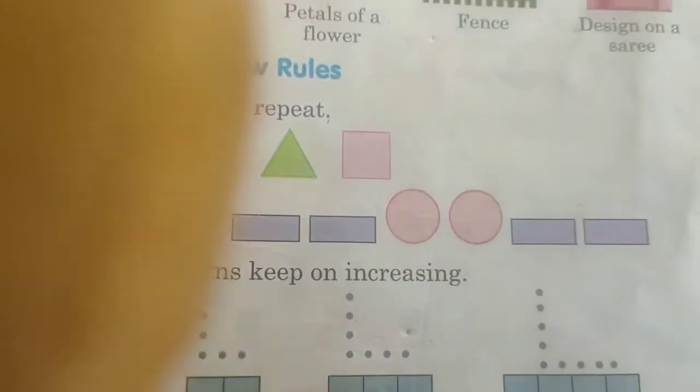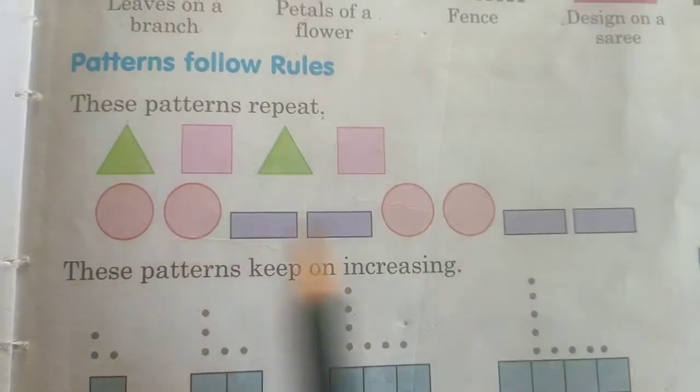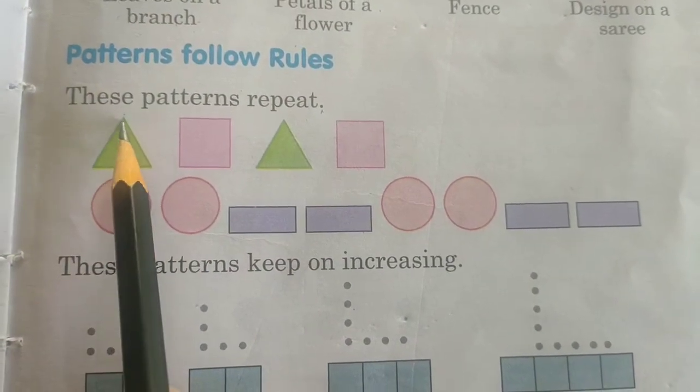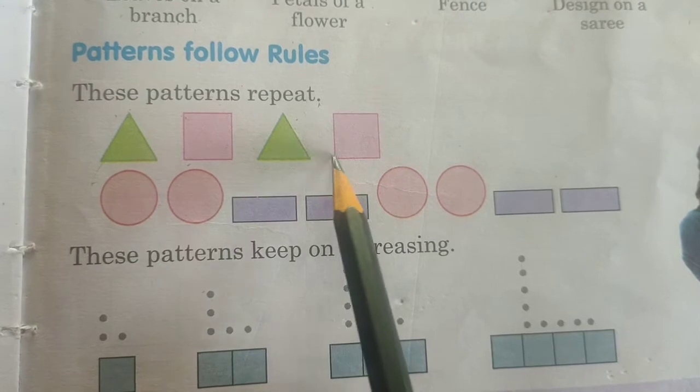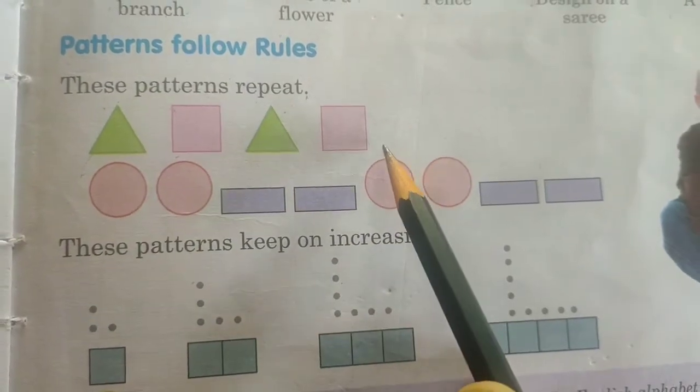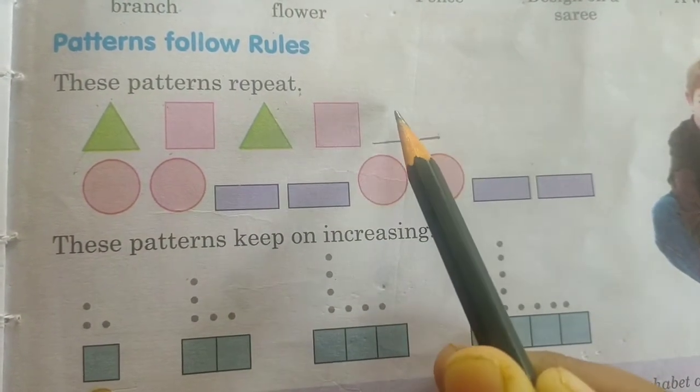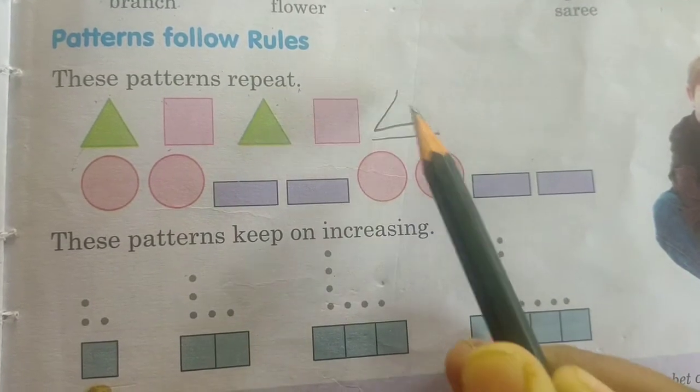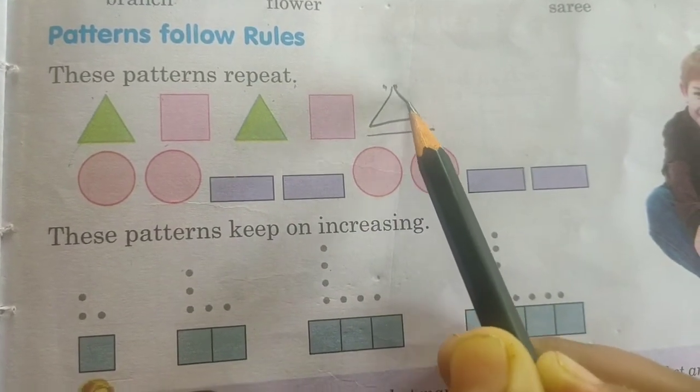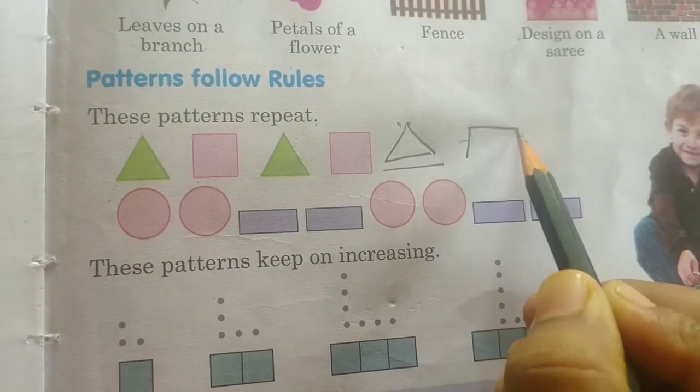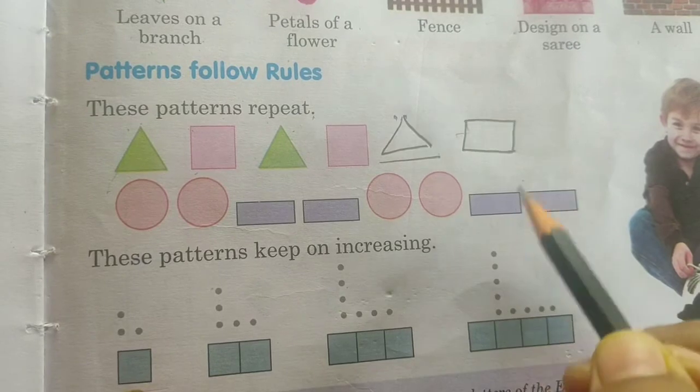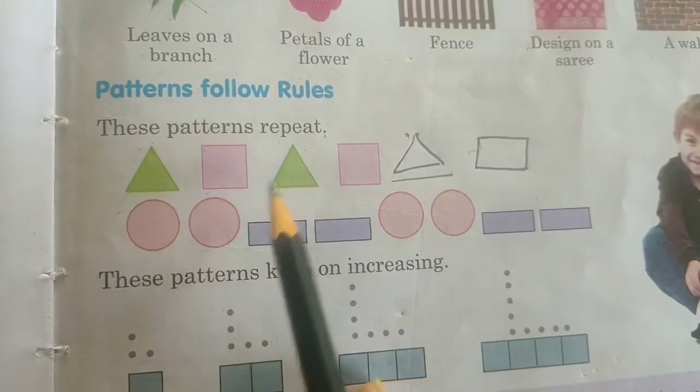See now how. The first picture is triangle, next is square, and another. Next again triangle, square. Which will come over here now? Which will come? Triangle. Correct? And next what will come? Square. Correct? This pattern is repeating.